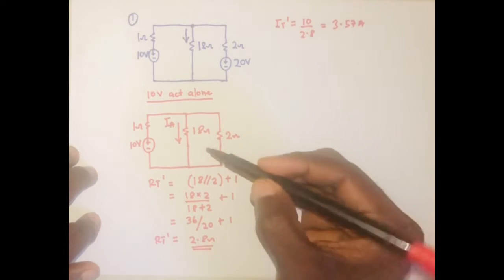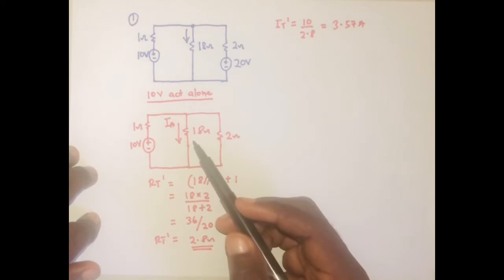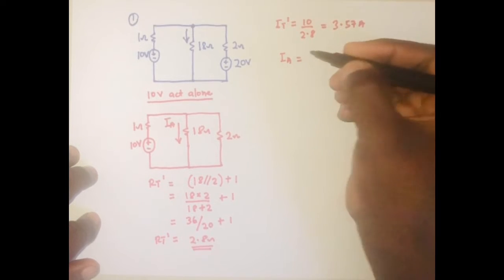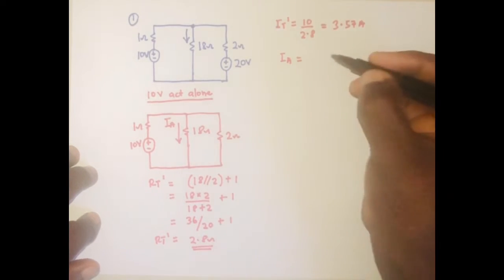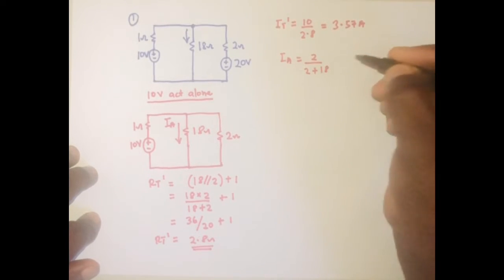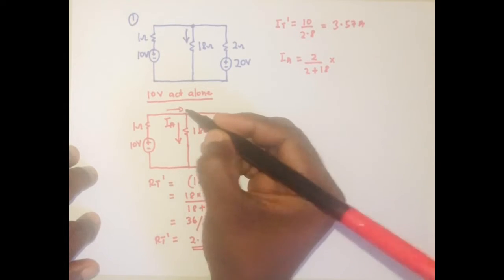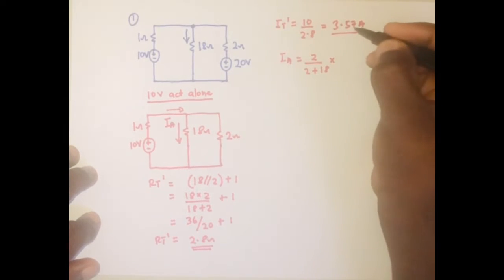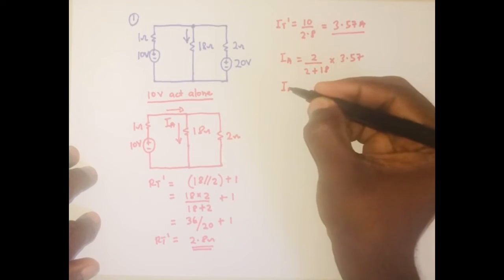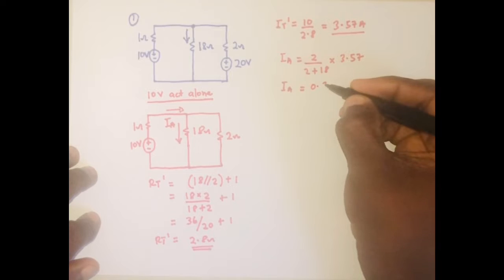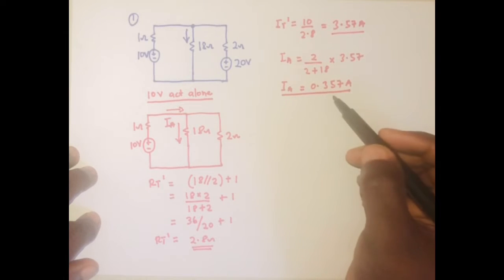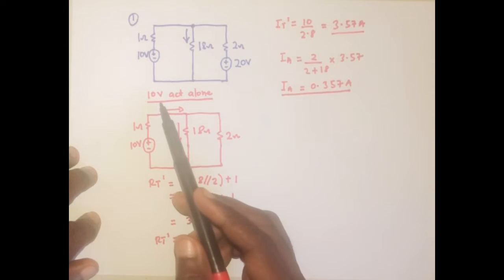Since we are interested in the current through the 18-ohm resistor, we use the current division rule. IA equals 2 divided by (2 + 18) times the total current of 3.57 amperes. So IA = (2/20) × 3.57 = 0.357 amperes. That is the current flowing through the 18-ohm resistor when the 10-volt source is acting alone.